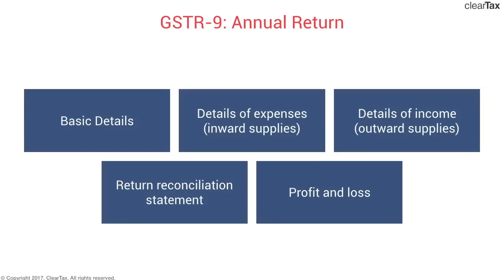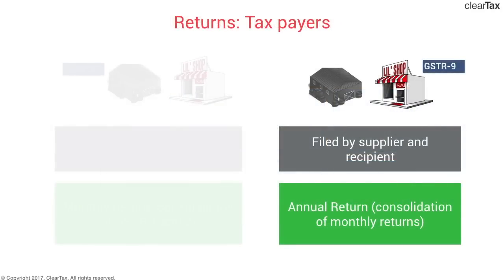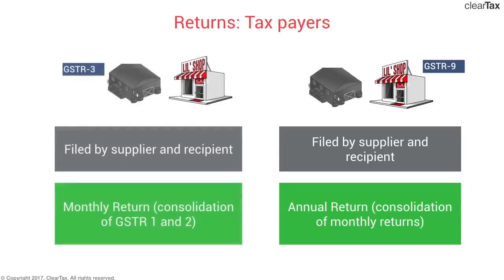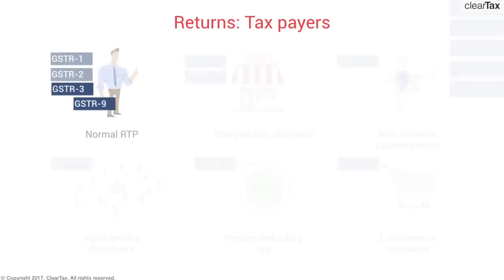GSTR-9 is a consolidation of all monthly returns. GSTR-3 is a consolidation of GSTR-1 and GSTR-2, which are statements of outward and inward supplies respectively. These are the four returns that a normal registered taxpayer has to file. There are due dates by which all these returns must be filed — we'll discuss the due dates for these four returns in the next video.